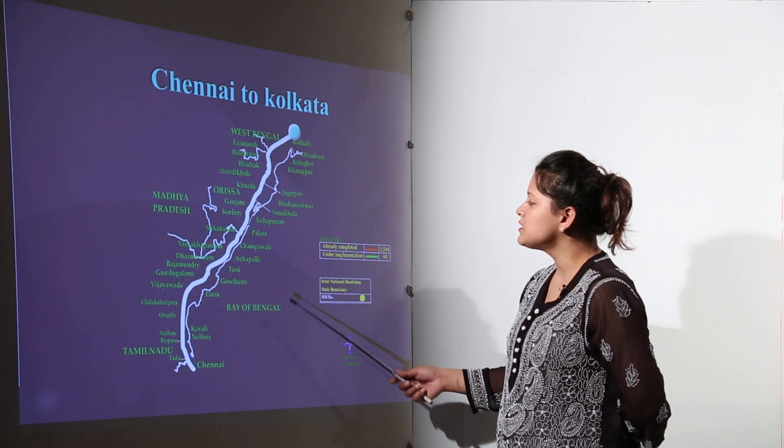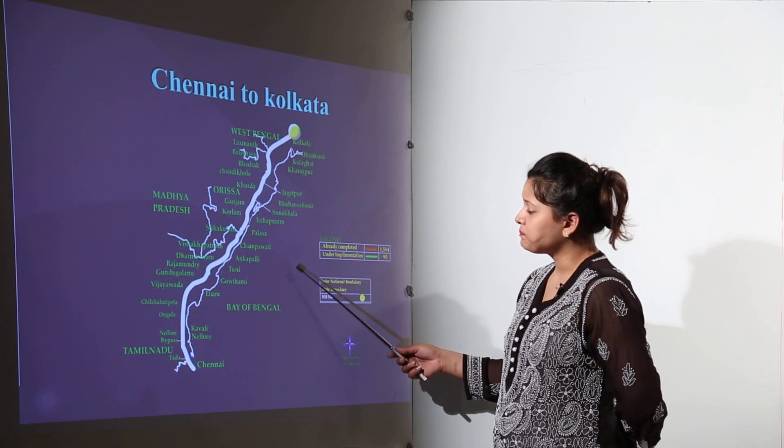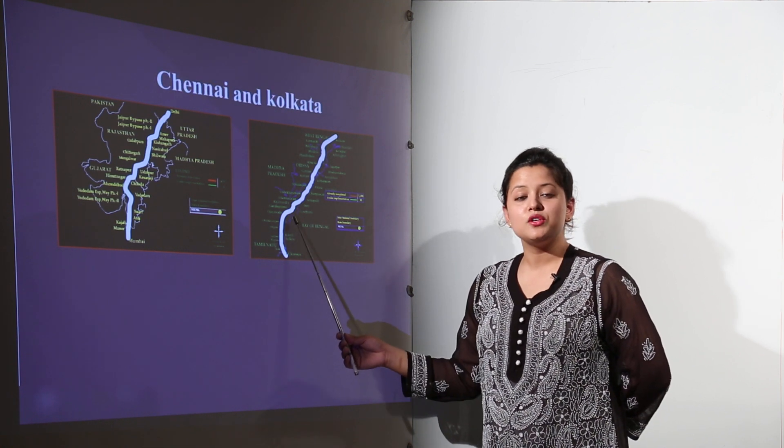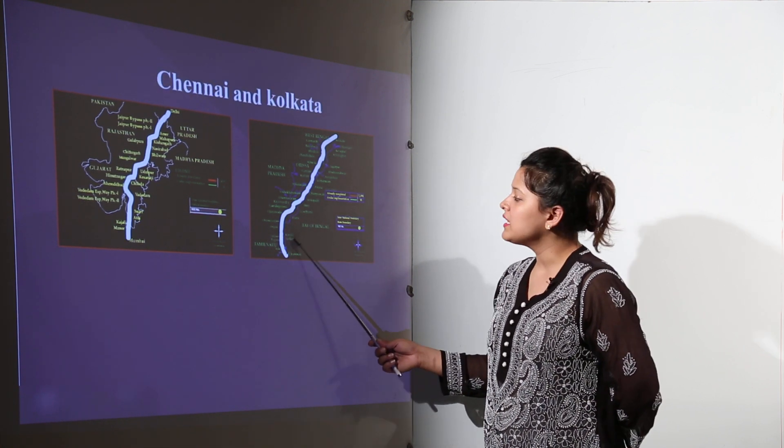So for these measurements we use the unit kilometers. And what would be kilometers? We will just discuss it. So therefore for measuring the distances between the two places you can use the unit for measuring that is kilometers.